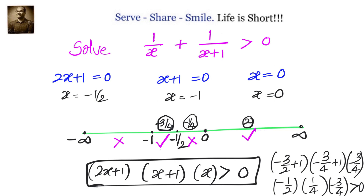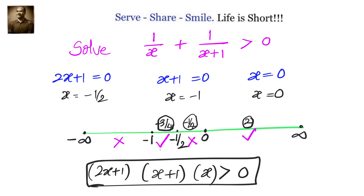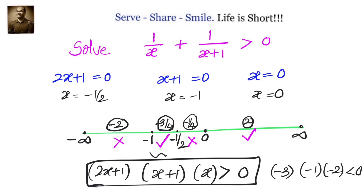Similarly, let us check between minus infinity and -1. Taking x = -2: (2×(-2)+1)(-2+1)(-2) = (-3)(-1)(-2). Minus times minus times minus is less than 0, which is not greater than 0. So the interval (-∞, -1) does not satisfy the inequality.